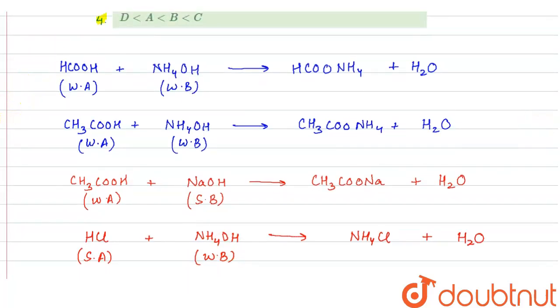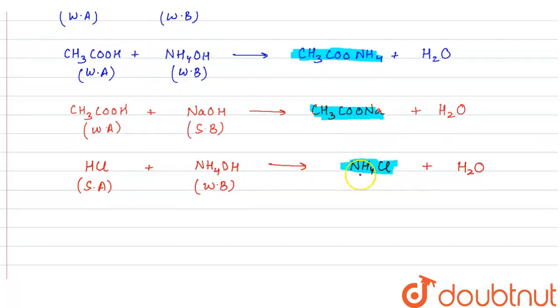Now let us see the nature of the salts which are formed here: HCOONH4, CH3COONH4, CH3COONa, and NH4Cl. If we look at NH4Cl, here we have HCl strong acid and weak base is NH4OH. When a strong acid reacts with a weak base, then the salt which is formed is acidic in nature. It will be acidic in nature because here we have a strong acid. It is acidic in nature, so it means its pH will be lowest.